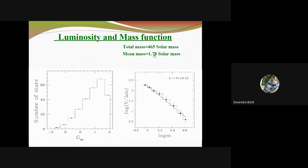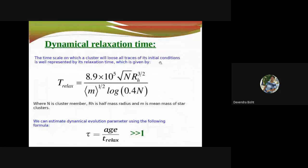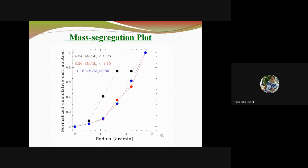We estimated dynamical relaxation time. The relaxation time is also coming less than its age. The dynamical evolution parameter, which is the ratio of age and relaxation time, is coming much greater than one. This study indicates that this object is dynamically relaxed.